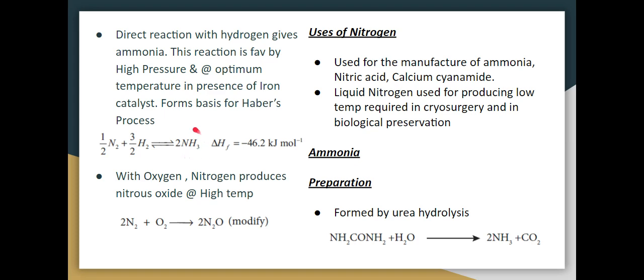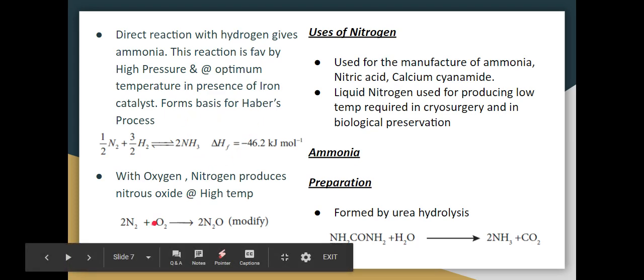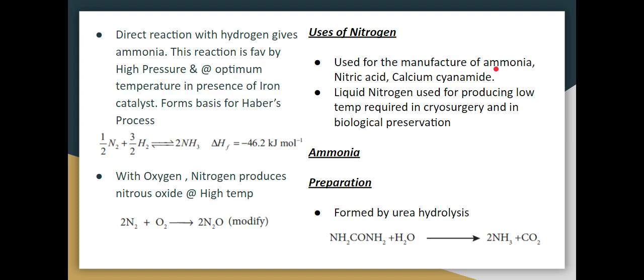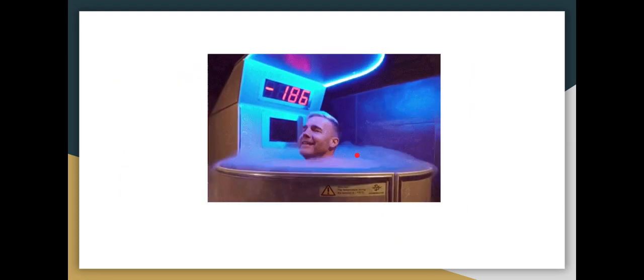Direct reaction with hydrogen gives ammonia. This reaction is favored by high pressure and optimum temperature in presence of iron catalyst. The process is N2 + 3H2 gives 2NH3 (modified). This is the Haber's process. With Oxygen, Nitrogen produces nitrous oxide (N2O) at high temperature. Nitrogen usage: ammonia, nitric acid, calcium cyanamide. Calcium cyanamide and liquid nitrogen are produced at low temperature for cryosurgery and biological preservation.